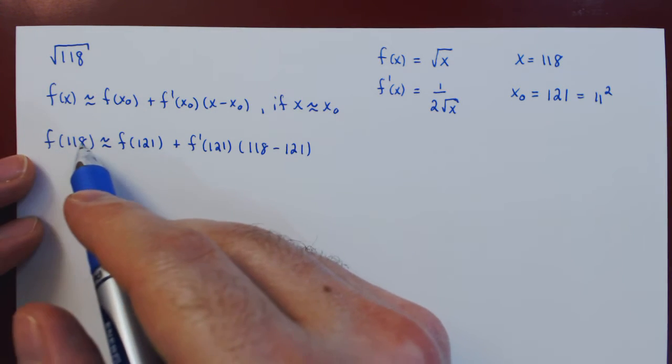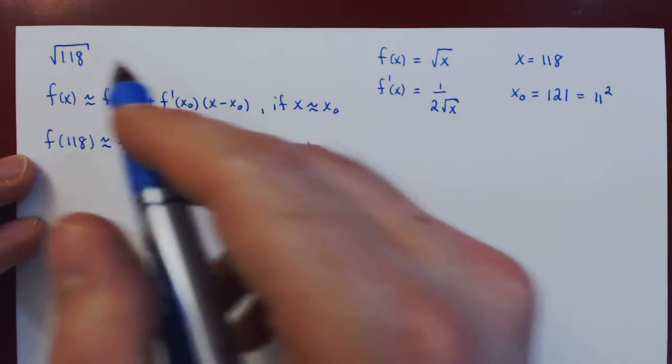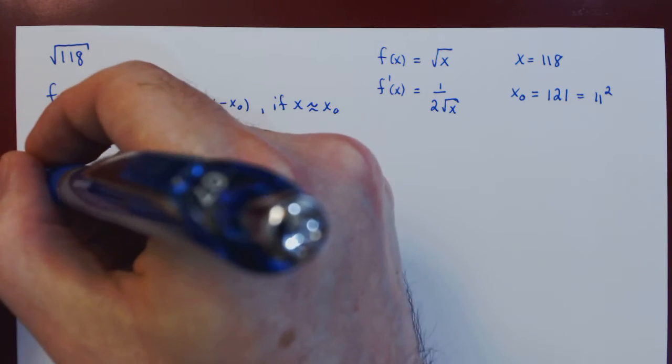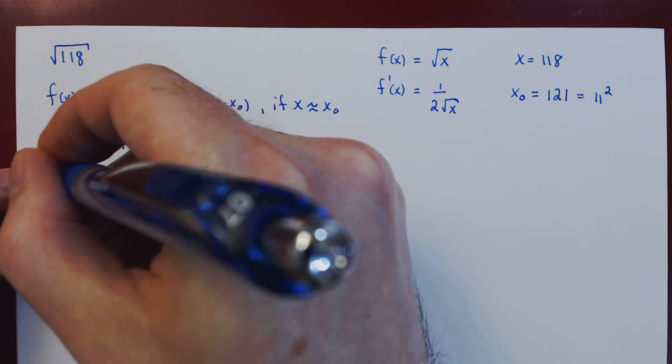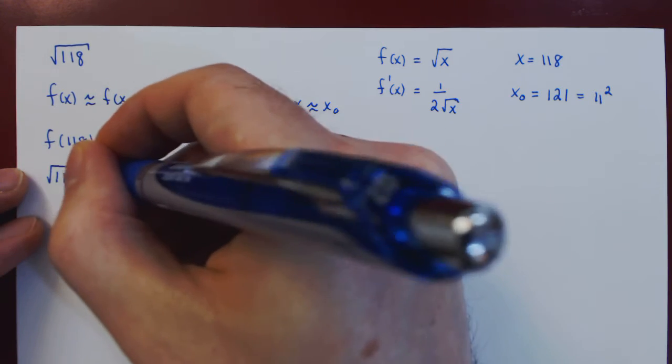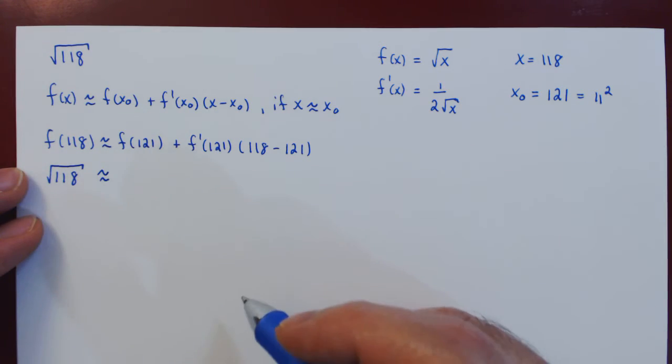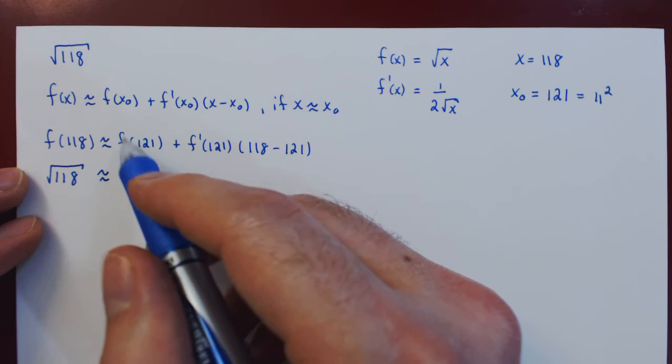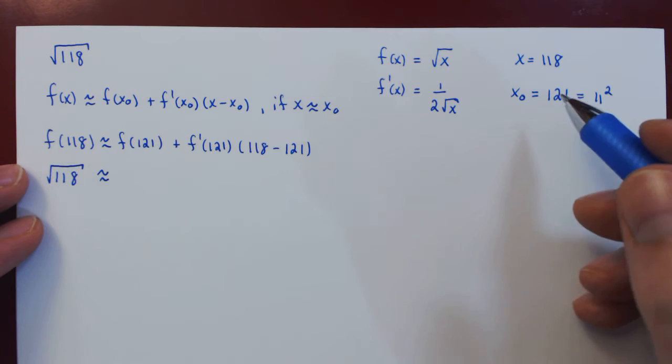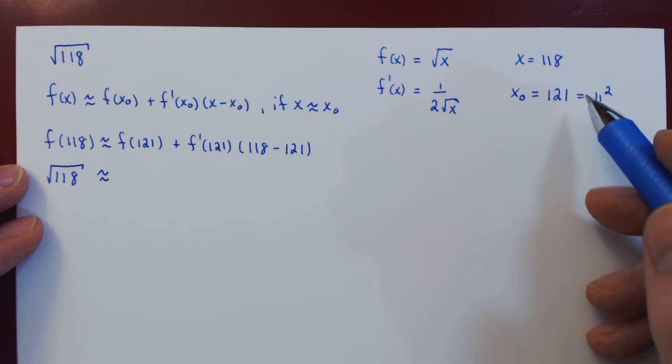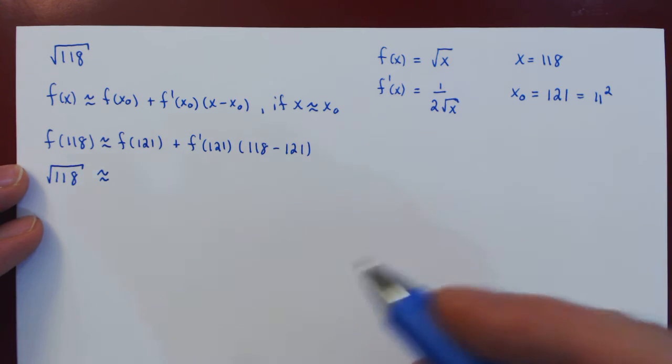Well, f(118), that is the root of 118, that is our objective, the number that we want to evaluate. And that is approximately the function at 121. Well, the square root of 121 is the root of 11 squared, which is 11,